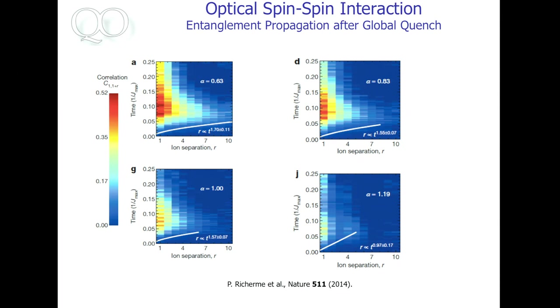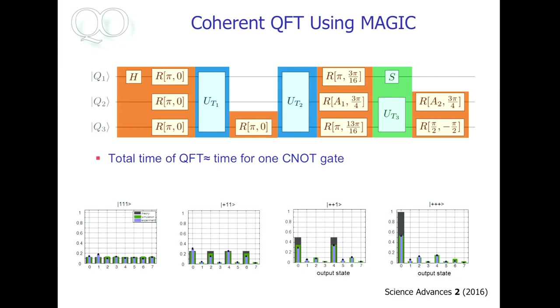So what you see here is basically the separation between the ions and then the time it takes for correlations to spread. And then this alpha here, that's the exponent with which the interaction scales. So they can vary this exponent and then look at how entanglement spreads through a spin chain.